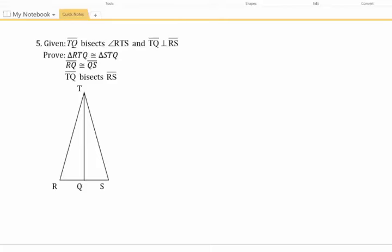So in this one we're given that TQ bisects angle RTS. I'm going to put an arrow to kind of show me that this is a bisector, and that TQ is perpendicular to RS. We're supposed to prove that the triangle on the left is congruent to the triangle on the right, that RQ and QS are congruent, and TQ bisects RS.